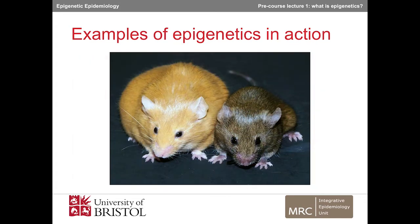A classic example of epigenetics in action is the agouti mouse. These two individuals are genetically identical — the only difference is that they have different DNA methylation at a very small region of the genome near the agouti gene. This gene controls hair colour and is also involved in metabolism. The brown mice are lean and healthy and have a methylated region upstream that leads to higher expression of the agouti gene — i.e. the gene is switched on. If that region is unmethylated, the gene is switched off, and the mouse is a strawberry blonde colour, fat, and has metabolic problems.